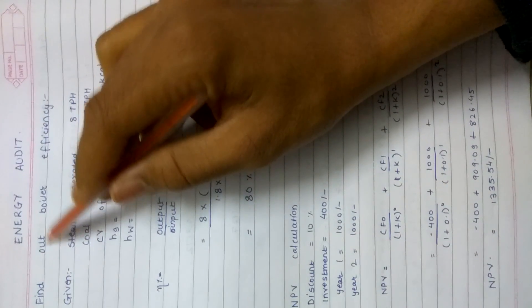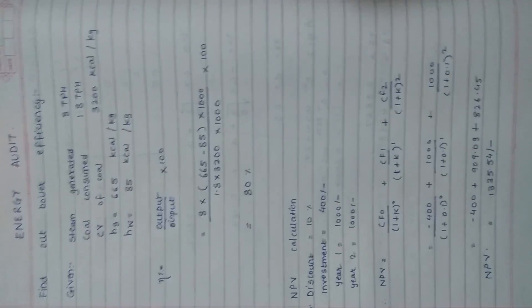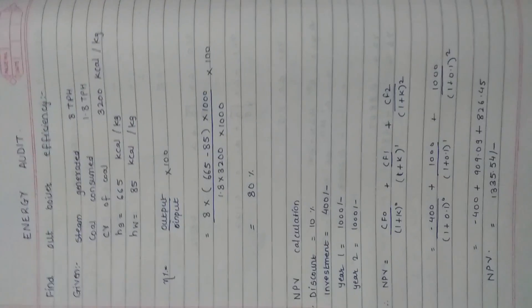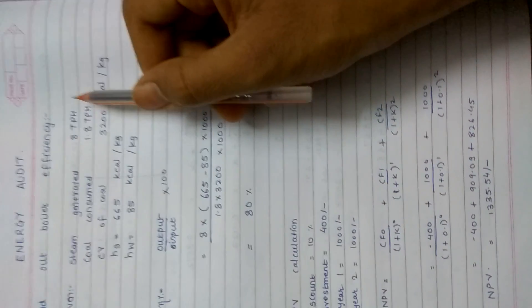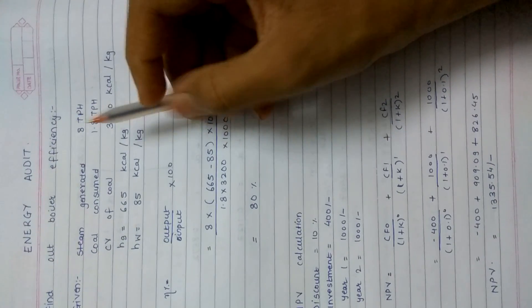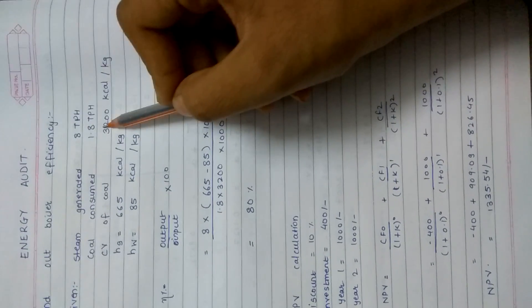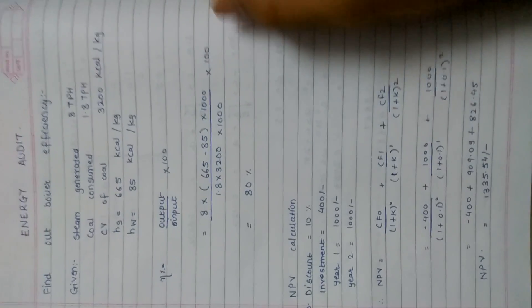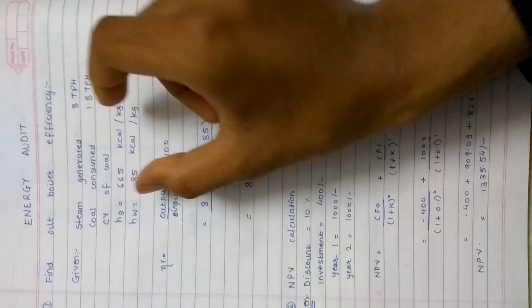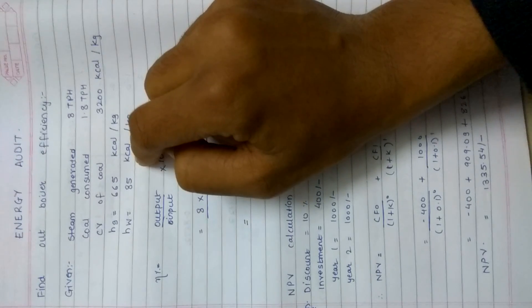So we have been told to find out the boiler efficiency. As we know, efficiency is output upon input. The output given is the steam generated in the boiler and the input will be the coal consumed and the energy of the coal. Also we have been given the enthalpies of the boiler, the water and gas, that is the steam and the water.